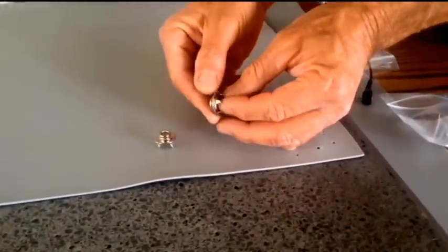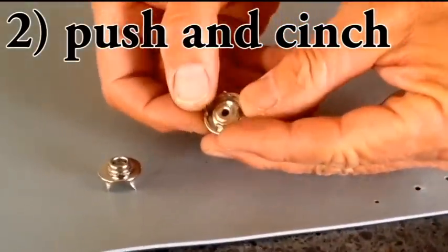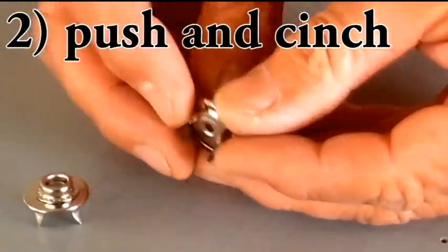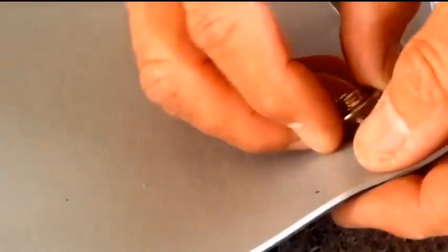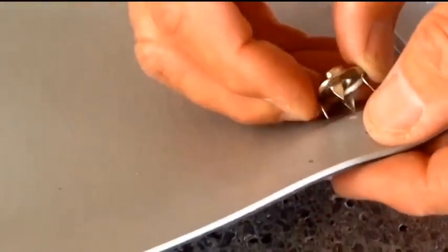Now these are your push and cinch style snaps. You'll notice these have four ears on the back, nice and pointy. With these kind of snaps, they come in a female or a male. Let's go ahead and we'll push one through and we'll show you what's involved in these.